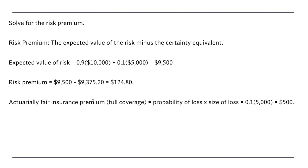An actuarially fair insurance premium in this example, assuming full coverage where if you have a storm you'll get the $5,000 reimbursed, is going to be the probability of the loss times the size of the loss. The probability of the loss is 0.1, and the size of the loss is $10,000 minus $5,000, which is a $5,000 loss. So an actuarially fair insurance premium would be $500.